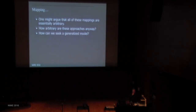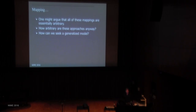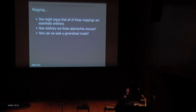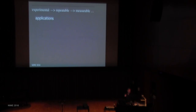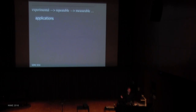One might argue that all of these mappings are essentially arbitrary — that I've just made up a set of mappings. So it's interesting to ask in what ways are they arbitrary. Are they in fact informed by enculturation, by performance practice? Does enculturation of our cultural practices produce intuitive relationships? How do we seek generalised models, and why does it matter anyway? I think it matters because we want, as a community, to move from experimentation to repeatability, to things that are robust and measurable, to applications in the broader world. The value and creativity that's in this community is extraordinary.